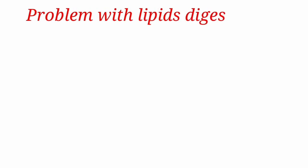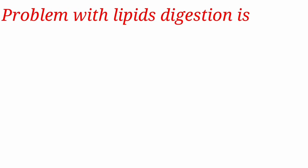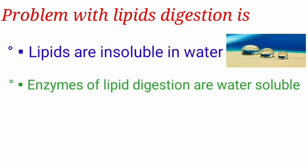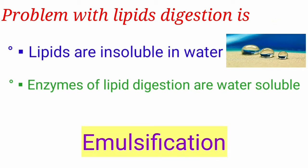The problem with lipid digestion is that lipids are insoluble in water, but the enzymes involved in lipid digestion are soluble in water. This problem is solved in the gut by the emulsification of fats, particularly by bile salts and phospholipids.